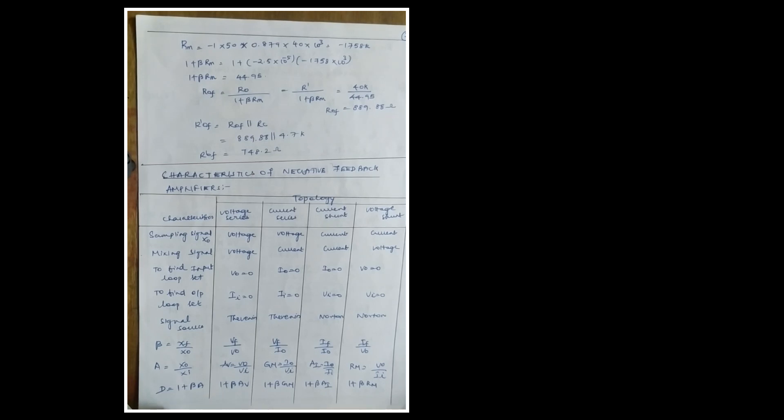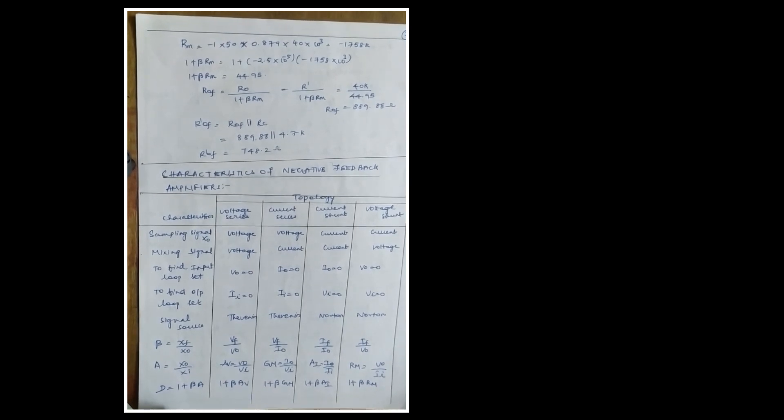Similarly, you will do the current series feedback network and the remaining two networks. An important question is the characteristics of negative feedback amplifiers — the university exam asked to compare all four topologies. The four topologies are: voltage series, current series, current shunt, and voltage shunt. For each, you compare: sampling signal, mixing signal, input loop, output loop, signal source beta, feedback beta, open-loop gain A, and desensitivity D = 1 + A·beta.